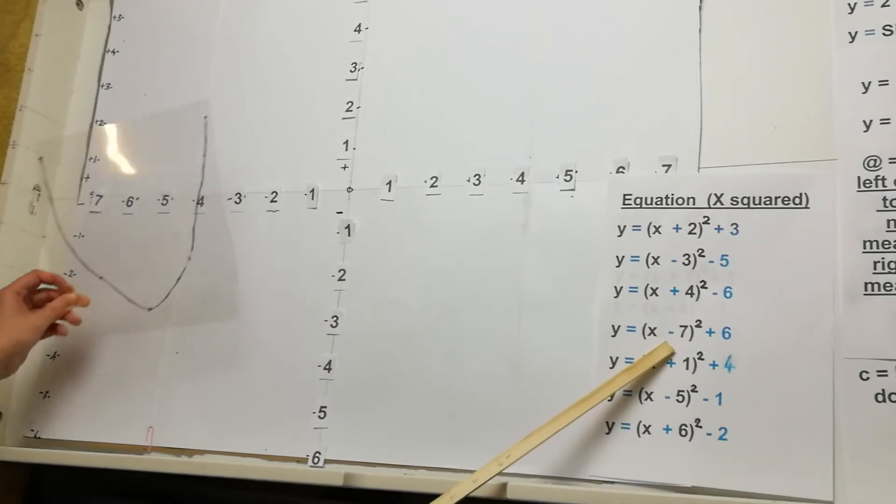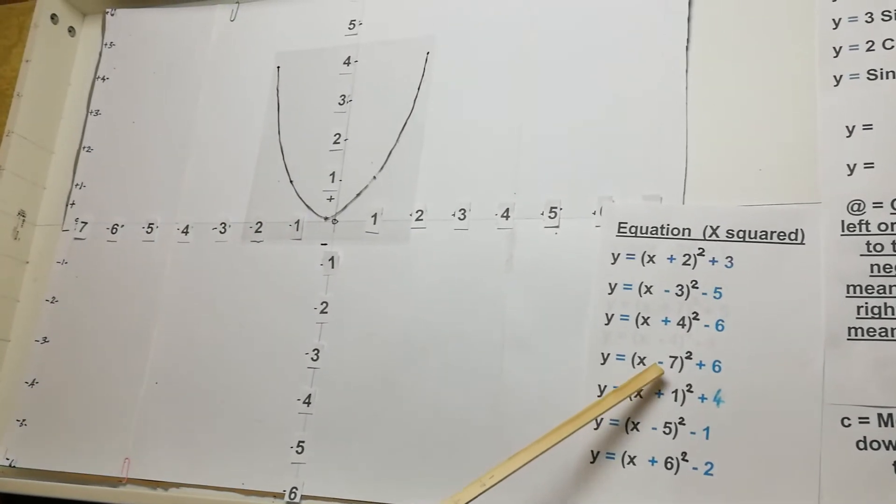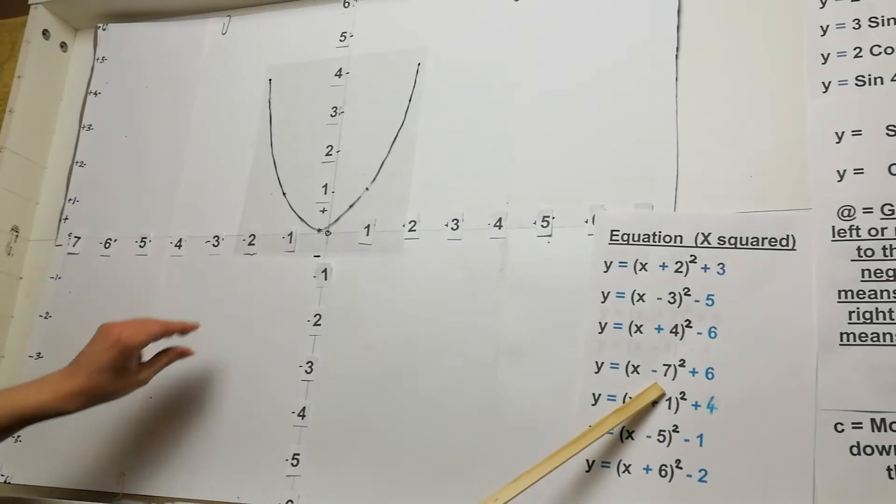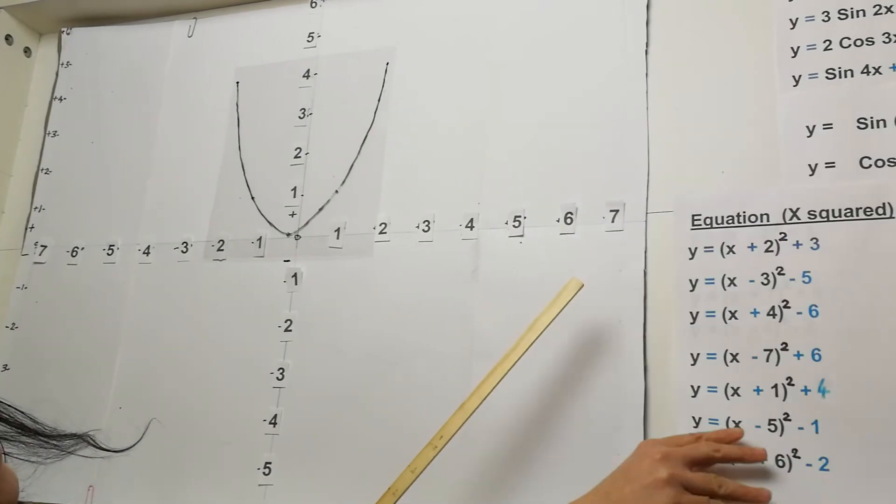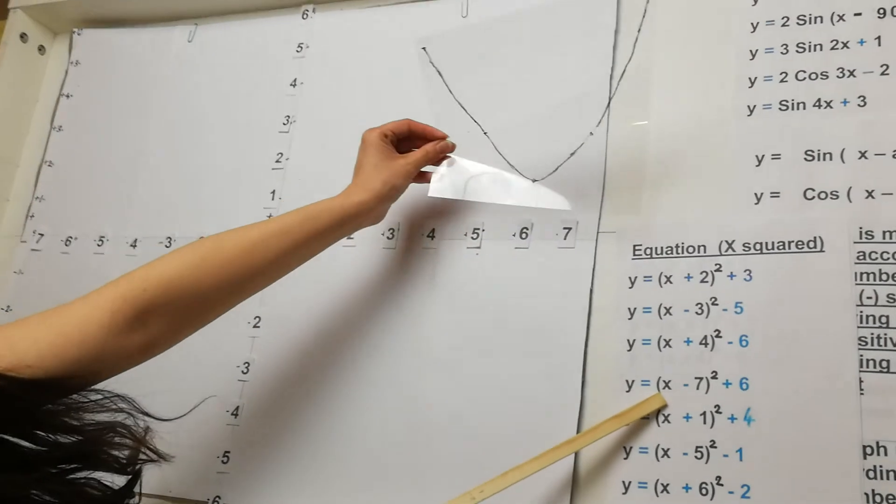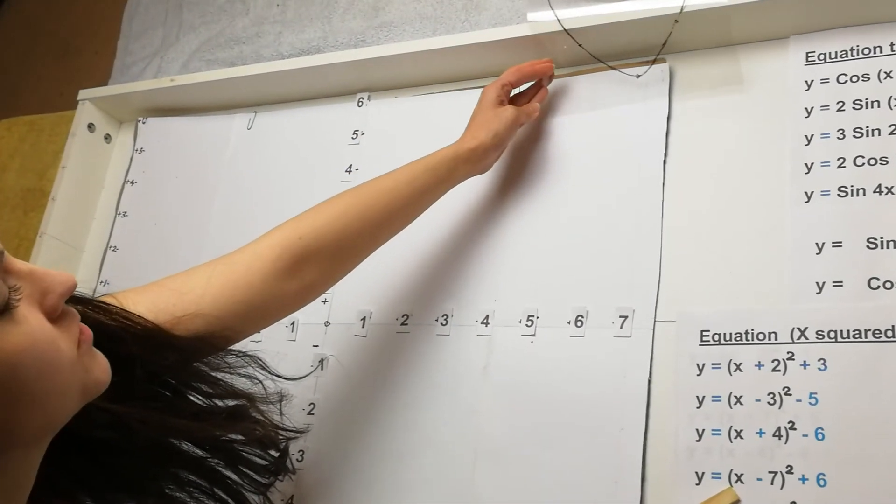In this one here, we've got y equals x take away 7 all squared plus 6. So take away 7 would mean moving to the right by 7. And then moving up to 6. Now this one might be quite difficult to actually place, but it'd be moving up to the number 6.